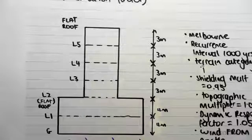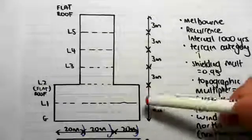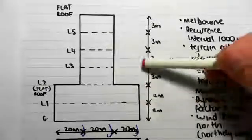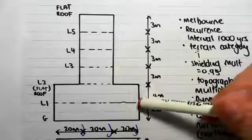But for this problem, we're going to be finding wind speeds at different heights. So we're going to be finding the design wind speed at level one, level two, three, four, five, and the roof. Those design wind speeds are all different.